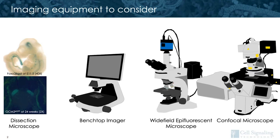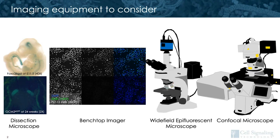The next example here is a benchtop imager. At CST, we use high content imagers on a daily basis. And here you can see a data set that we've generated this way. Benchtop imagers rely heavily on software, but with proper optimization, you can generate useful images here.